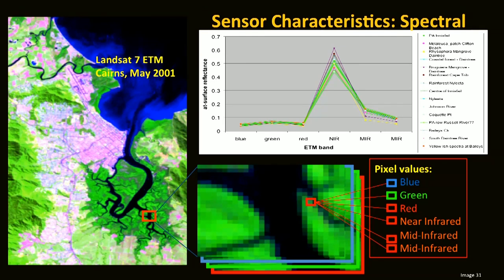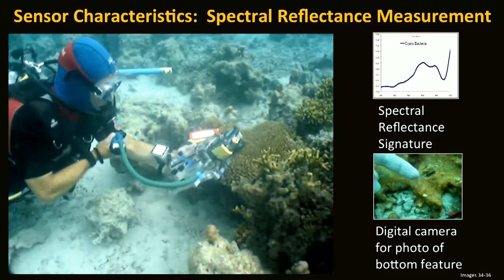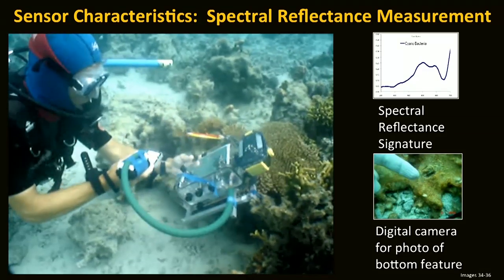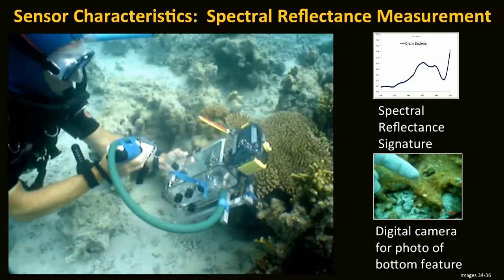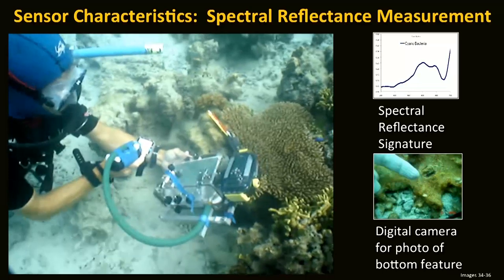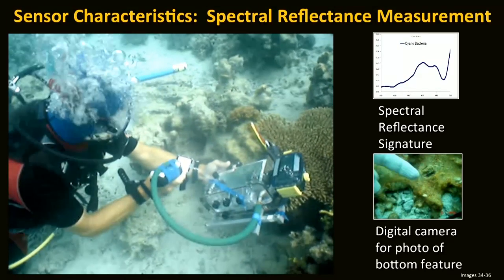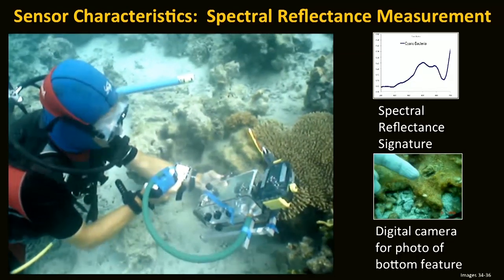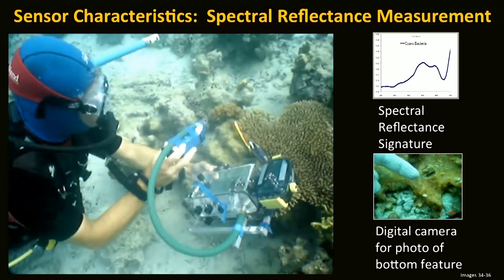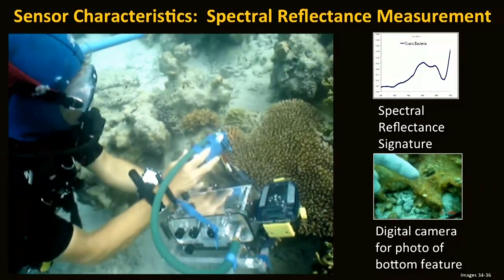Different features have characteristic spectral signatures, which Chris will talk about later as a basis for mapping. Here's an example of how we collect spectral reflectance signatures in the field — Chris Rolfsner taking a measurement over a calibration panel and then measuring the amount of light coming off the coral next to him. That coral reflectance signature is shown in the top right-hand corner, and it's exactly the same type of information that the satellite imaging sensor collects for each pixel in the image.